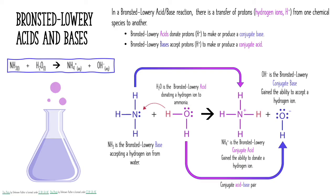The conjugate acid is paired up with the base — the base is always paired with the conjugate acid. Remember: acids and bases are always our reactants, and conjugate acids and bases are always our products. If you remember that the base is always paired with the conjugate acid, and the acid is always paired with the conjugate base, you'll be good. This is our second conjugate acid-base pair: ammonia and the ammonium polyatomic ion.